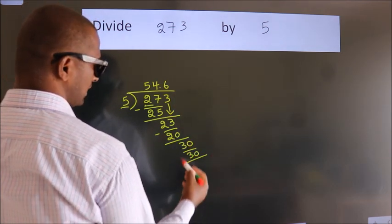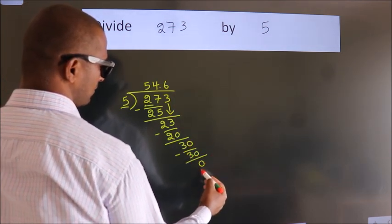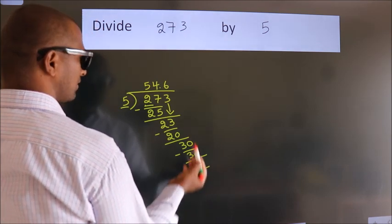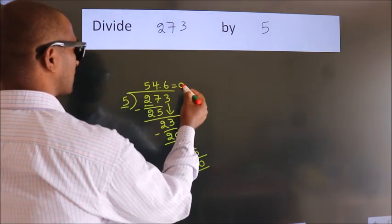Now we subtract and get 0. We got remainder 0, so this is our quotient.